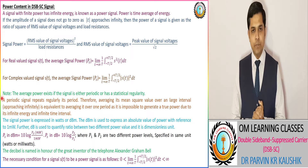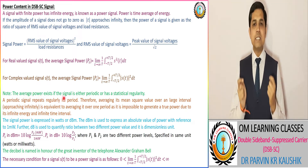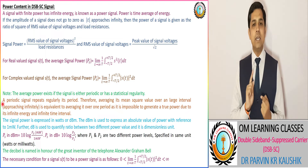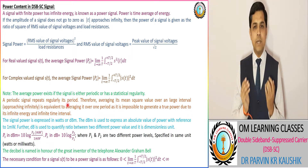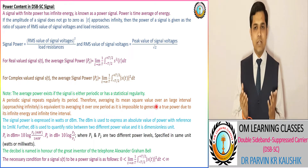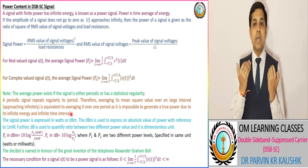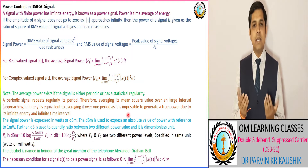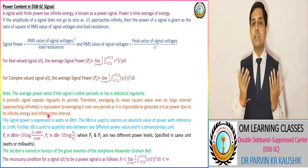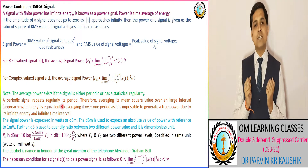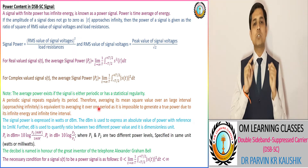The first important point regarding power is that the average power exists if the signal is either periodic or has statistical regularities. Another important point: if there is a periodic signal which repeats regularly as per its period, then averaging its mean square value over a large interval approaching infinity is equivalent to averaging it over one period. As it is impossible to deal with infinite energy and infinite time, the average value is considered instead.